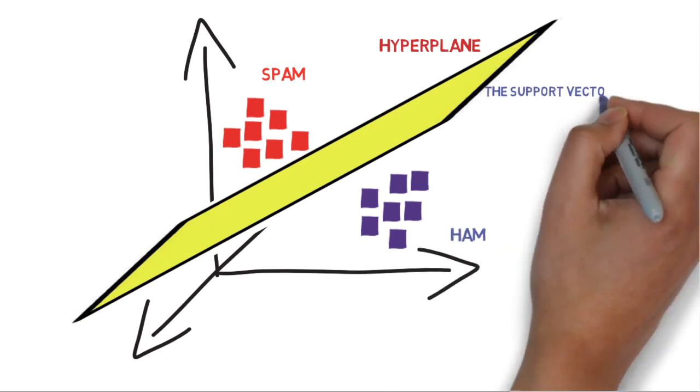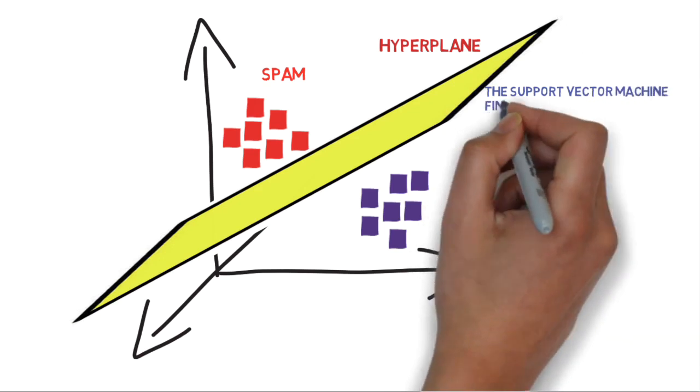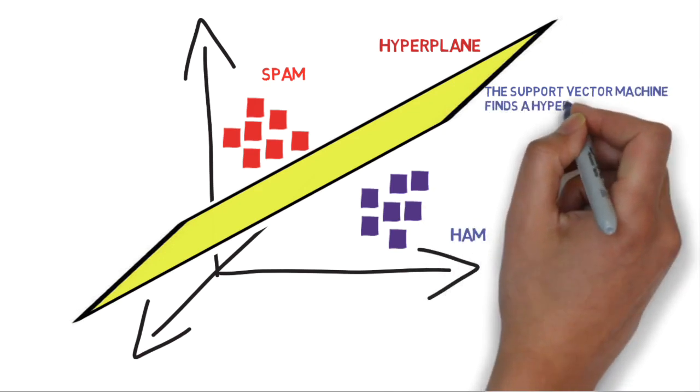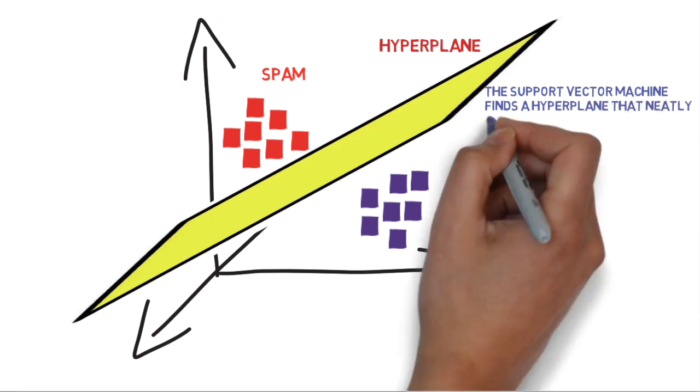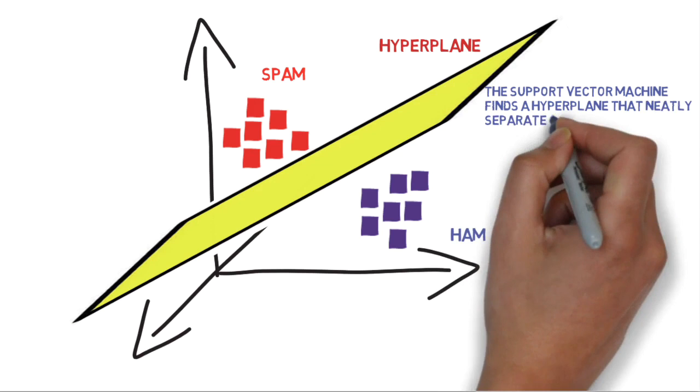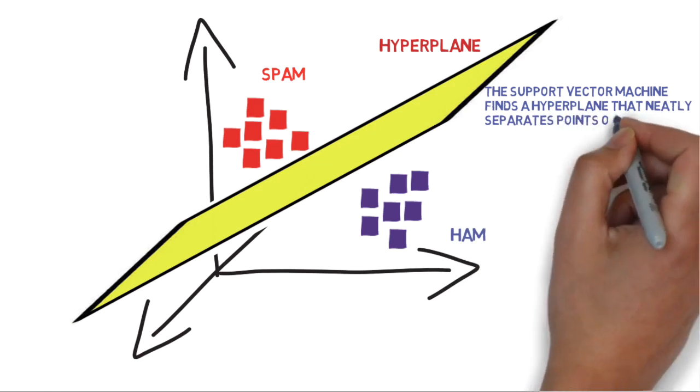This is the linear function that it tries to find. So the support vector machine finds a hyperplane that cuts between the two clusters of points and separates them into categories.